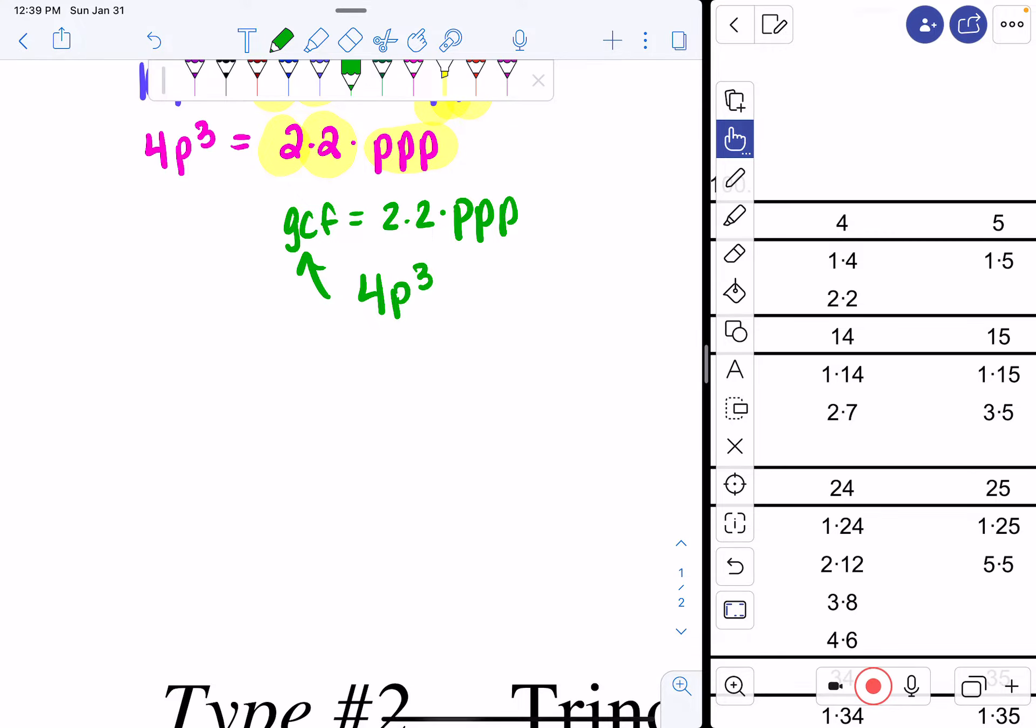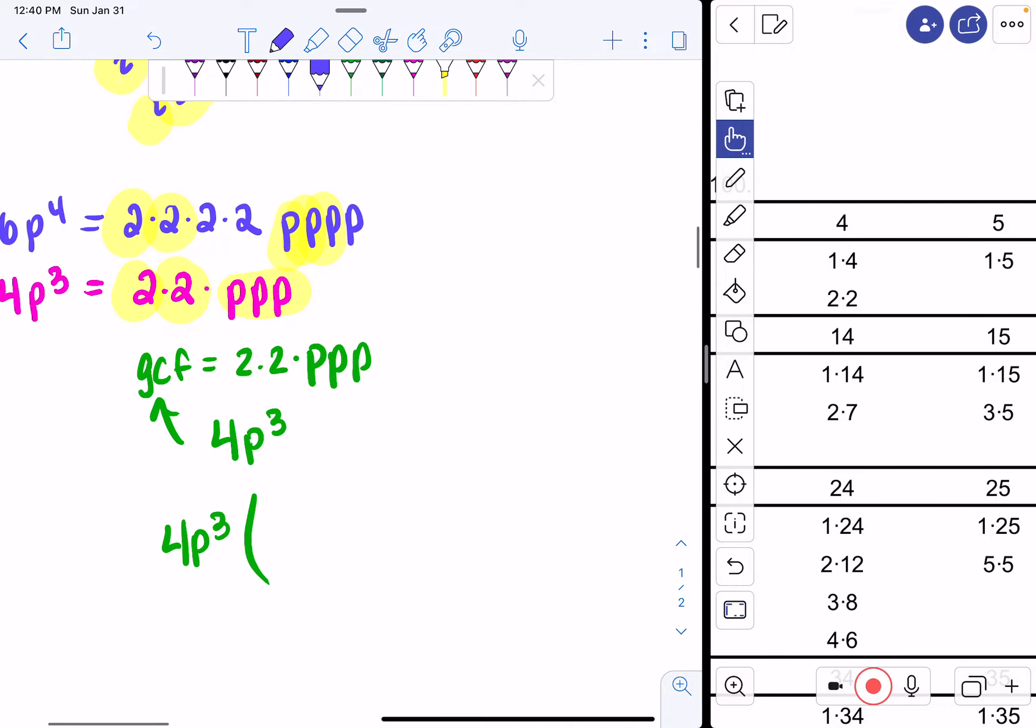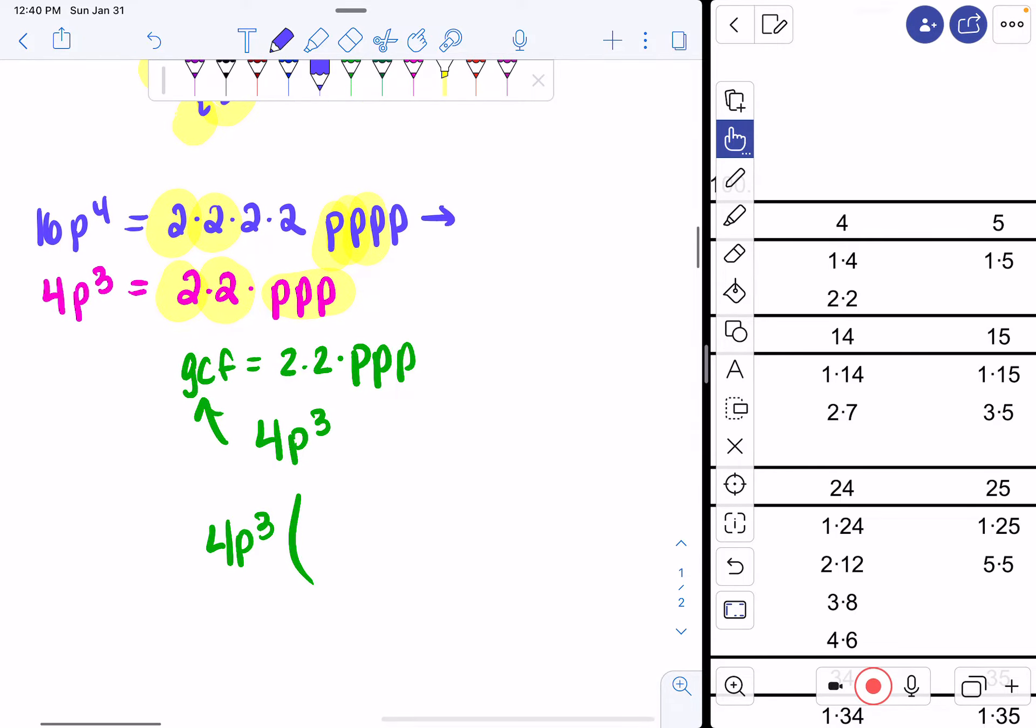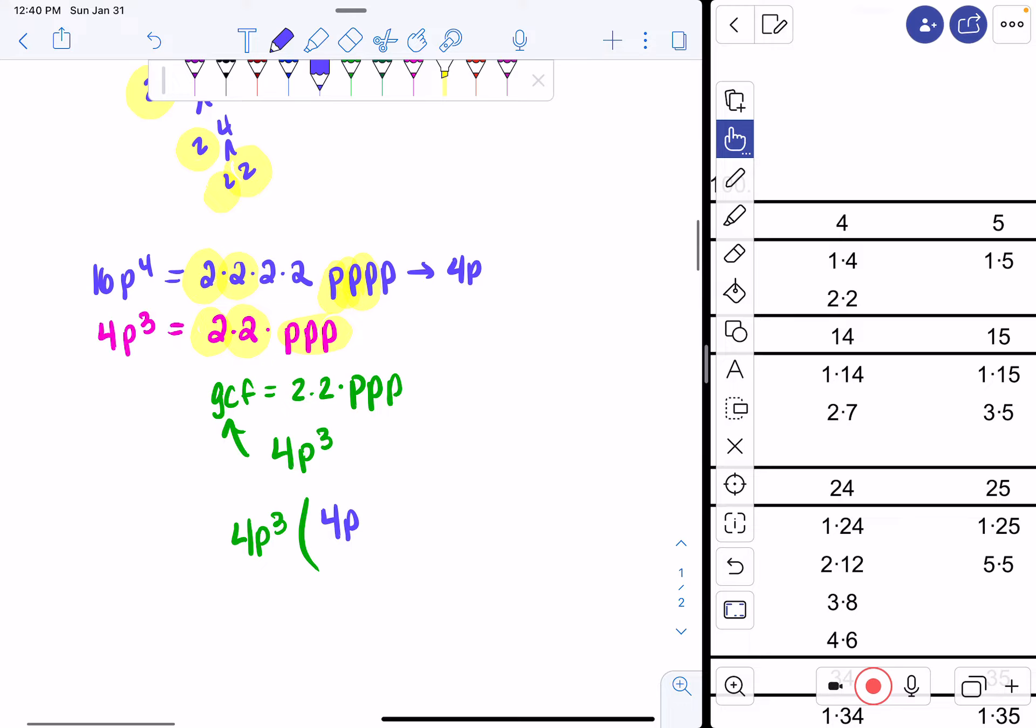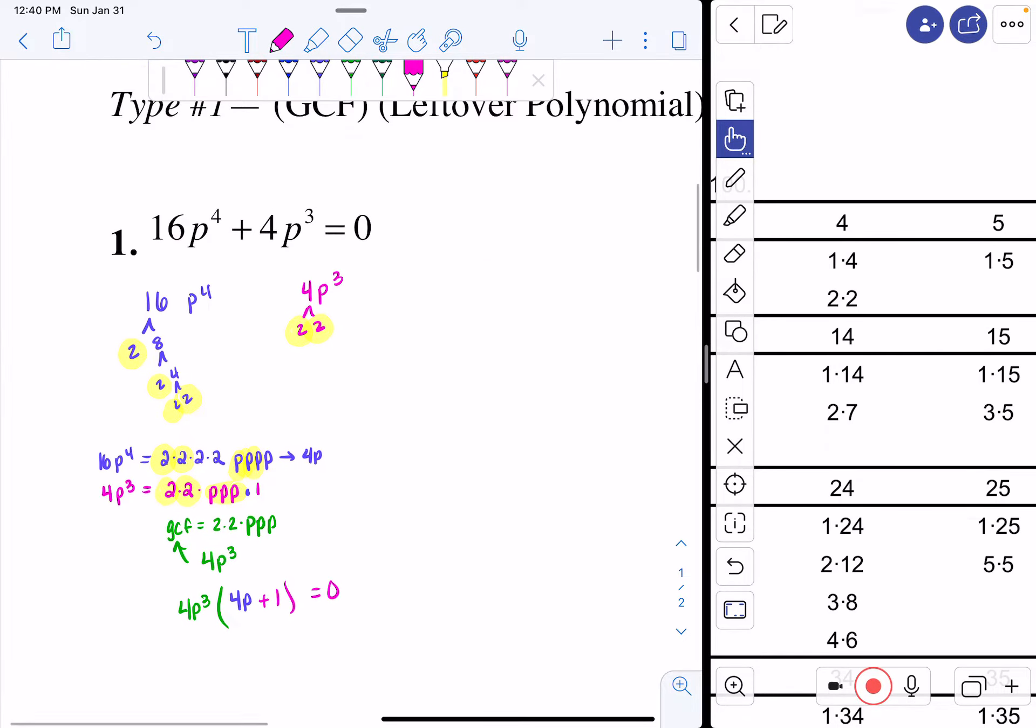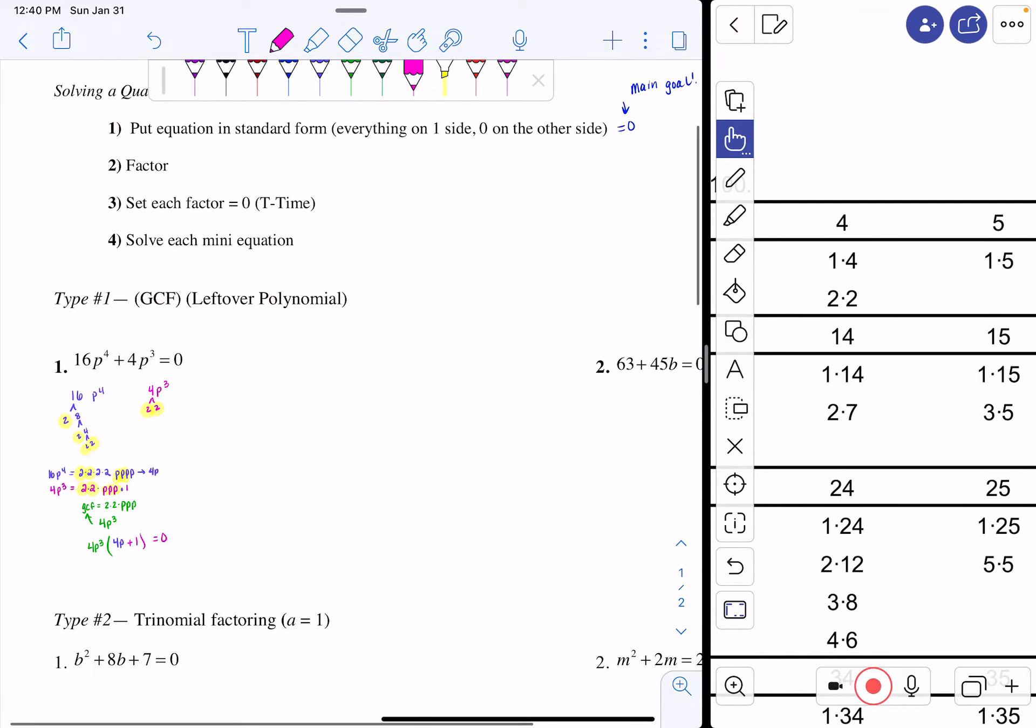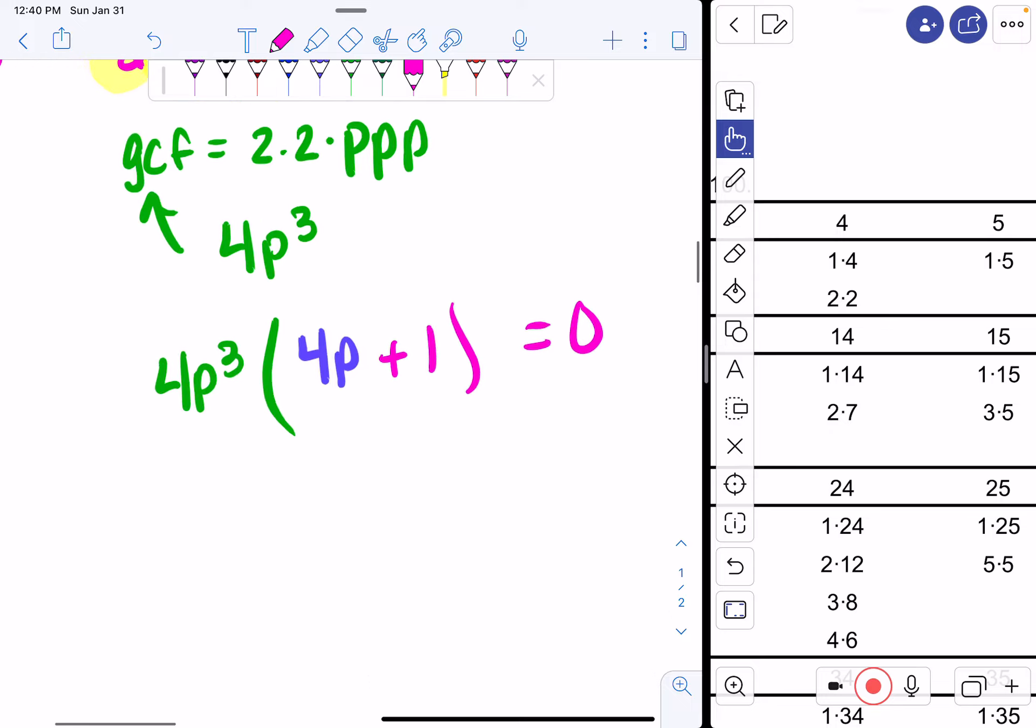Now I write it as GCF leftovers, so I would write it as 4p cubed, and then my leftover here is 4p, because 2 times 2 is 4, and then I have a p. And then I have nothing left over here, so I'm going to put a 1 as a placeholder, and then I set this equal to 0. So I have 4p cubed times 4p plus 1 equal to 0. So I factored, now I set each factor equal to 0, or I t-time it.